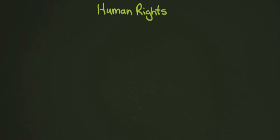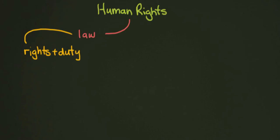First off, we covered the connection between human rights and how it relates to law. So we talked a little bit about what law is and how that works. We then moved into the relationship between rights and duties. A right is something that you are inherently owed, and a duty is basically the opposite of that — it's something that you owe someone else, or that your society owes someone else.